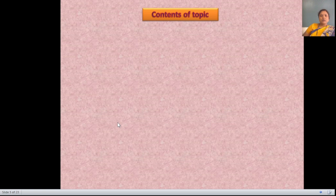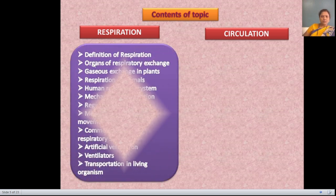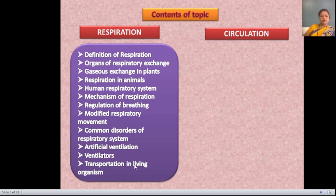Before starting today's topic, let's understand which sub-points are given. Related to respiration: definition of respiration, organs of respiratory exchange, gases exchange in plants, respiration in animals, human respiratory system, mechanism of respiration, regulation of breathing, modified respiratory movement, common disorders of respiratory system, artificial ventilation, ventilators, and transportation in living organisms.